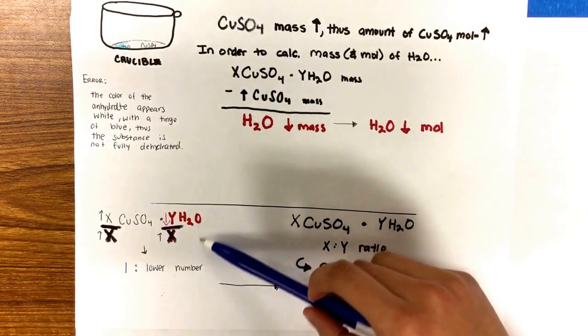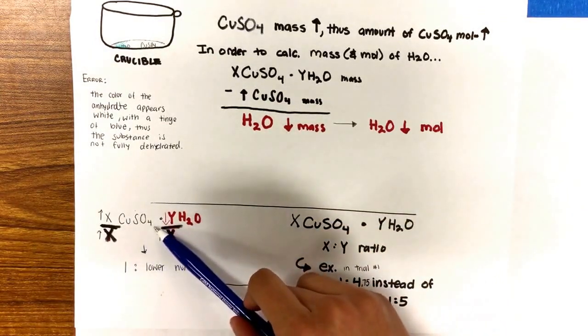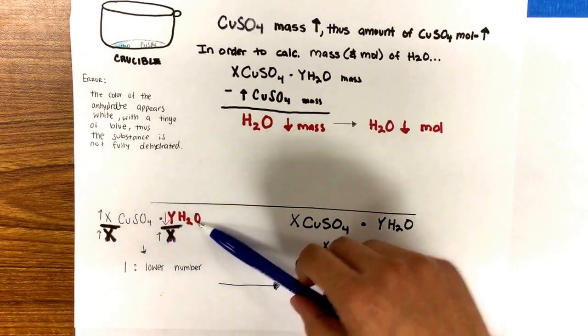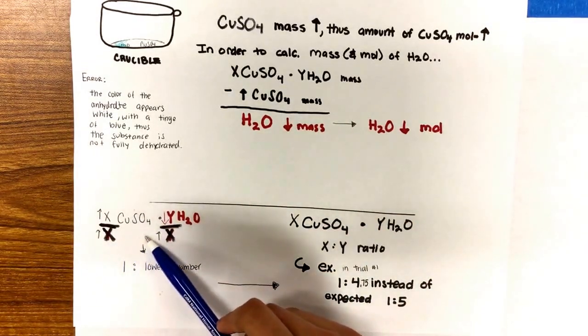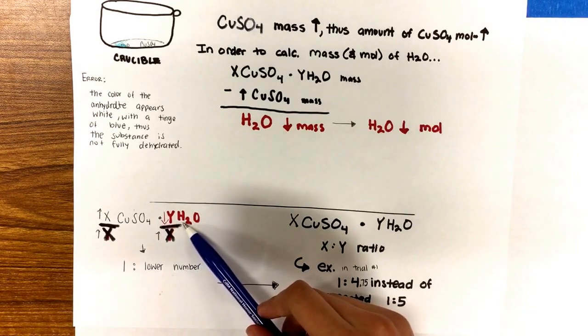Then you set up your ratio of CuSO4 to H2O. X represents the number of moles of CuSO4 and Y represents the number of moles of water.